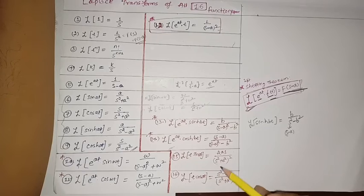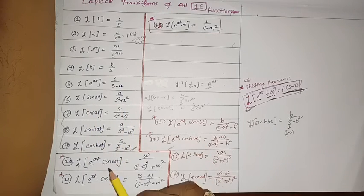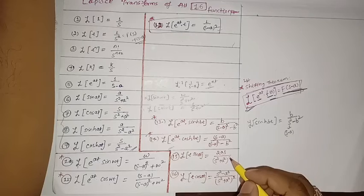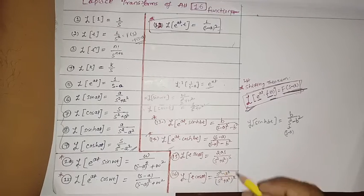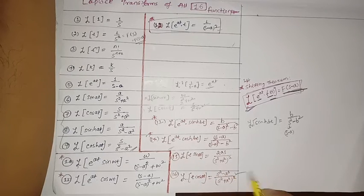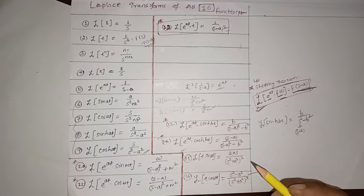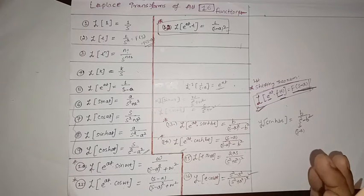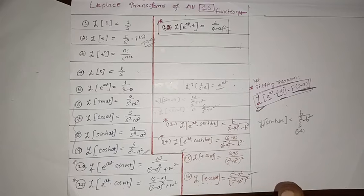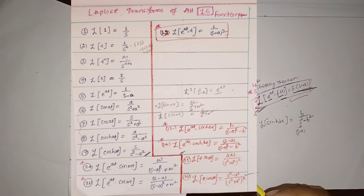To remember functions 15 and 16: since sin(at) and cos(at) both have denominator (s²+a²), for t·sin(at) and t·cos(at) the denominator becomes (s²+a²)². The numerator for t·sin(at) is 2as, and for t·cos(at) it is (s²-a²). Thank you so much for watching this video.